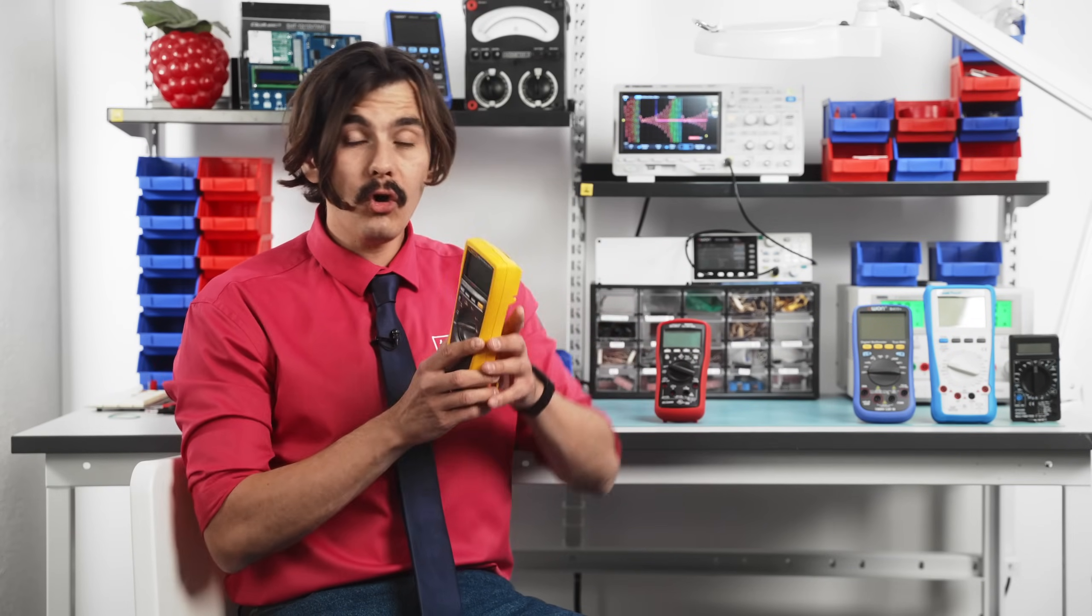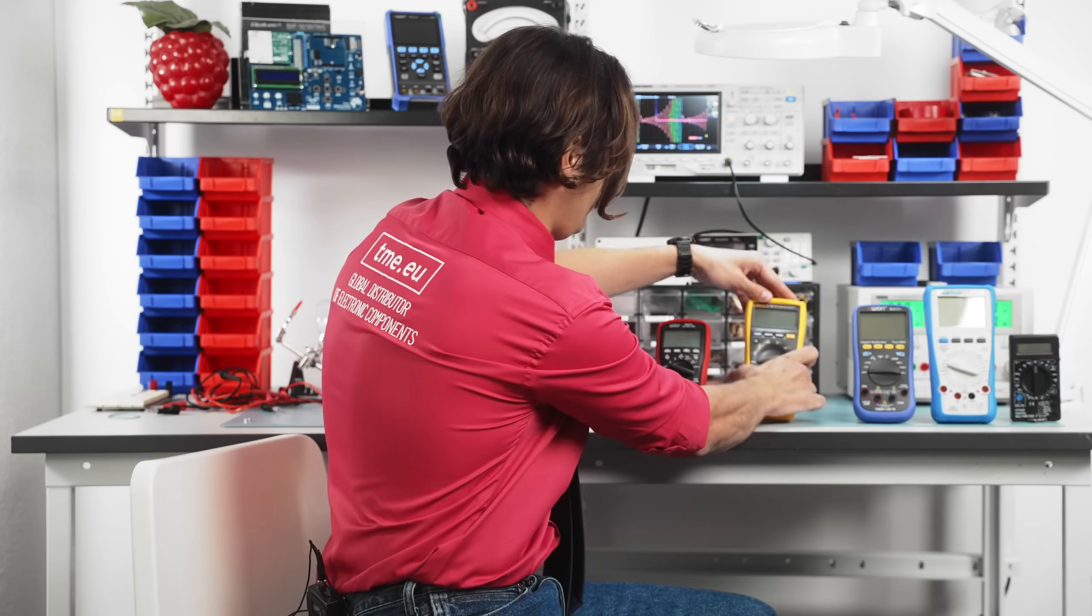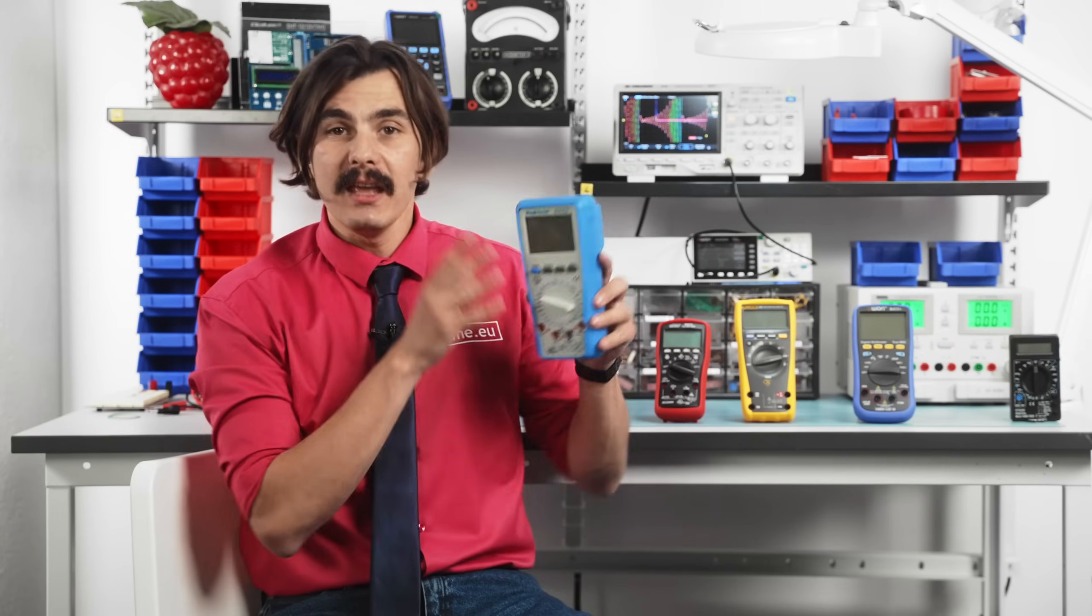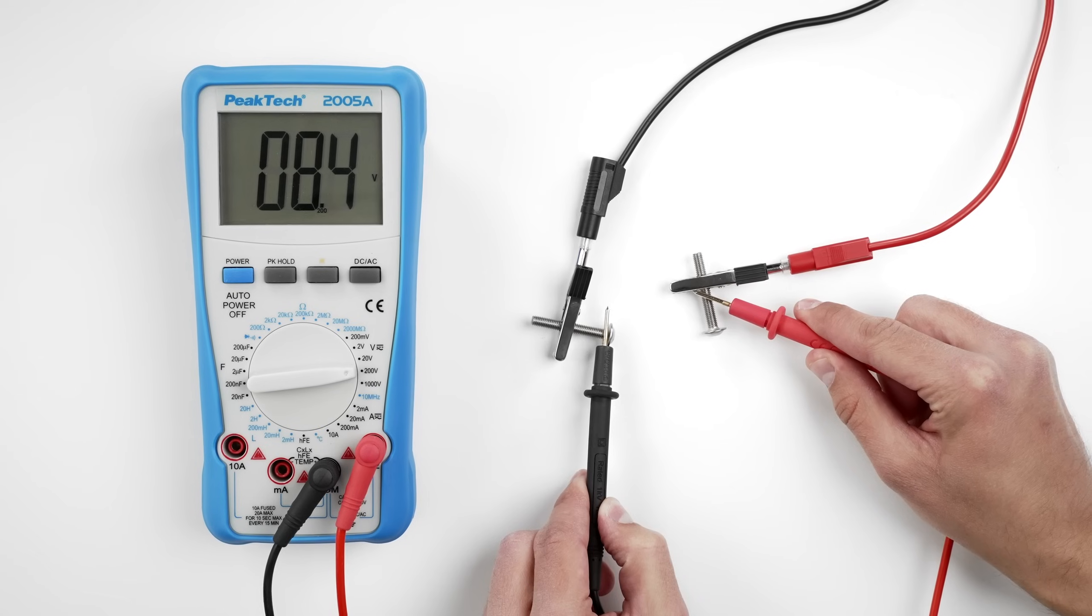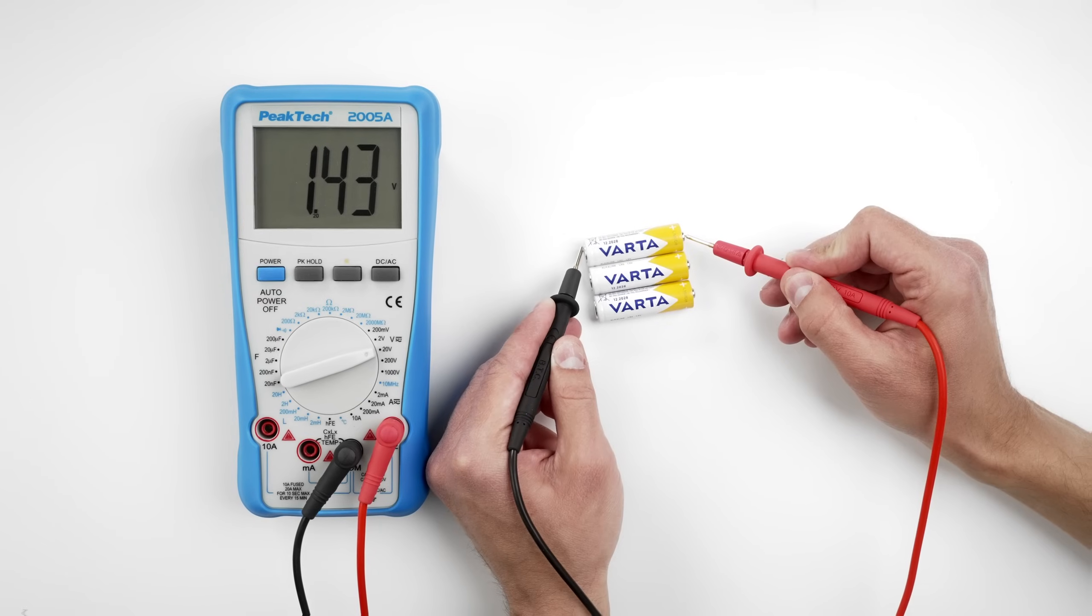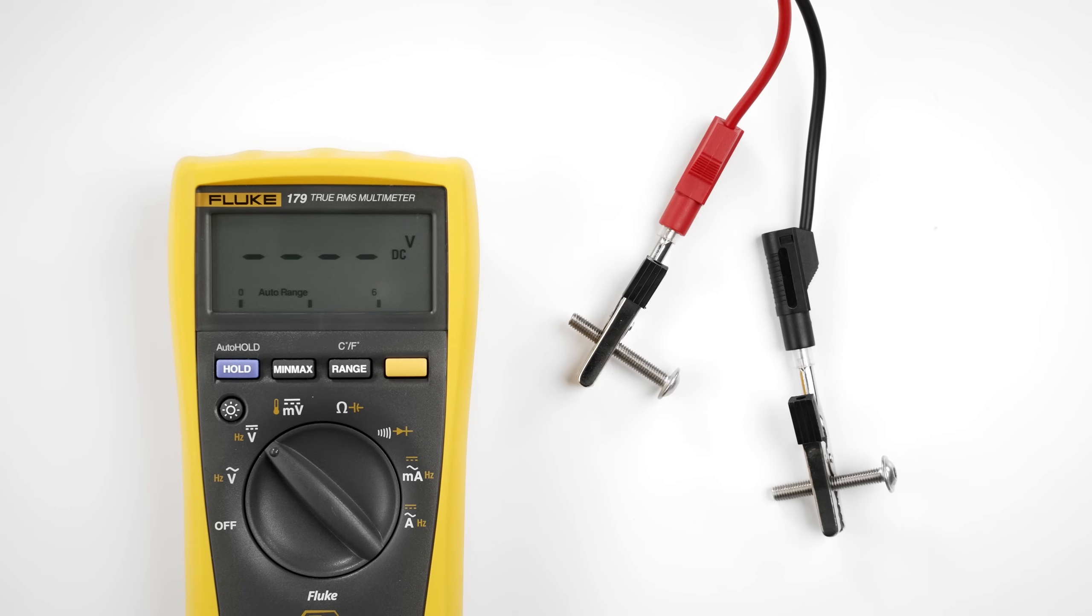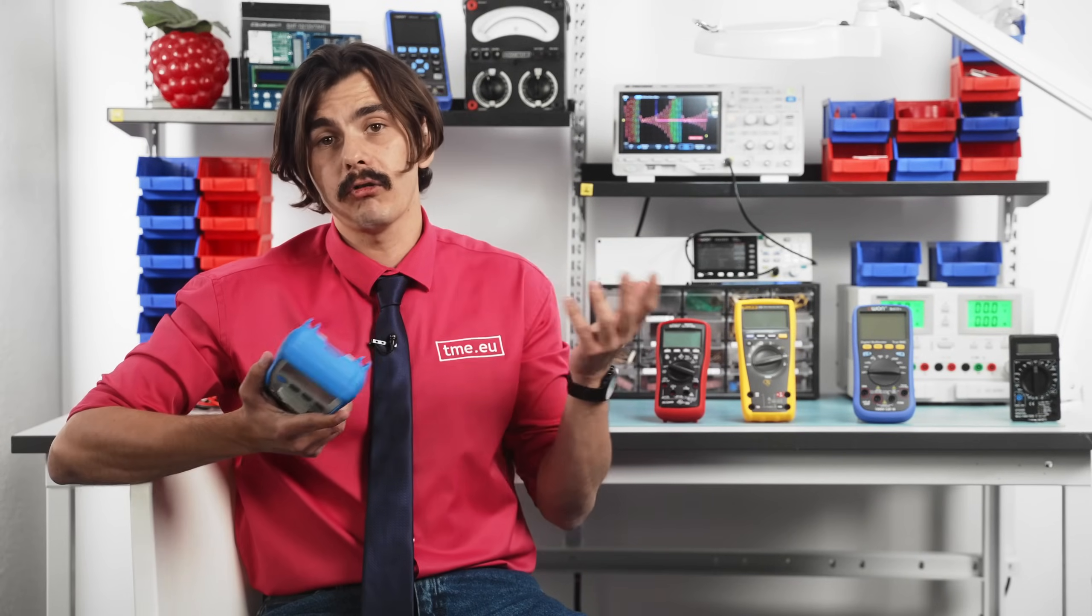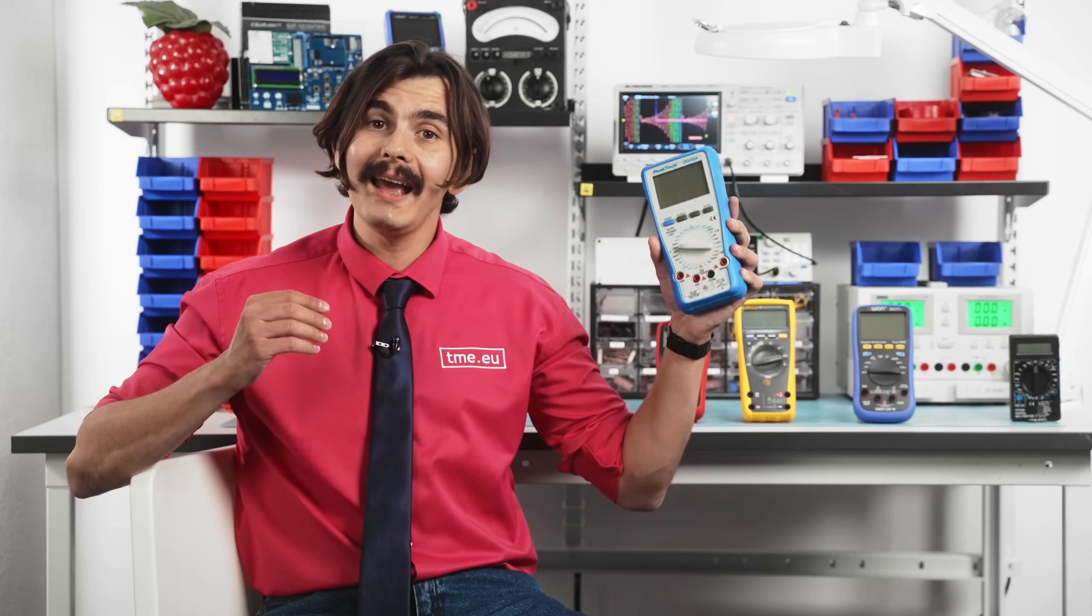Some multimeters require not only selecting the function but also manually setting the measurement range, just like on this one, the PICTEC 2005A, which we made a video about. If you are unsure of the value you will be measuring, it is safest to start with the highest range and then work downward for accuracy. Experienced users often prefer manual range selection for speed and consistency, especially when repeating the same measurements. Auto-ranging multimeters perform a similar task, automatically adjusting the range from highest to lowest until the correct range is found. This process may take a few seconds, but it allows one-hand operation.